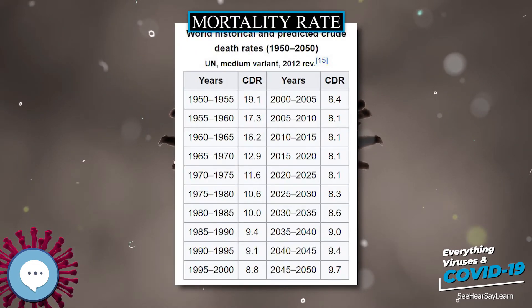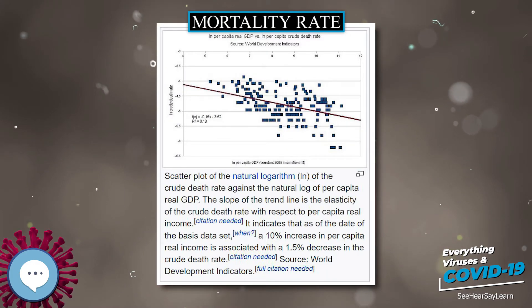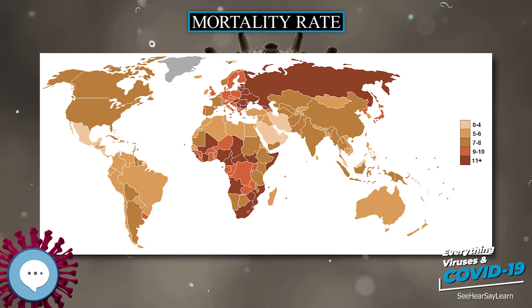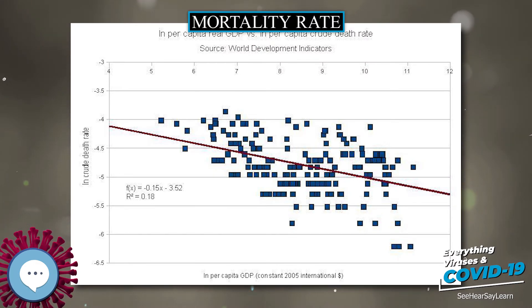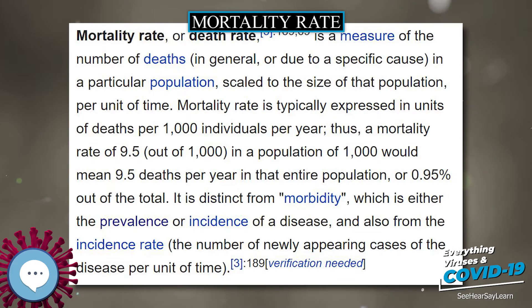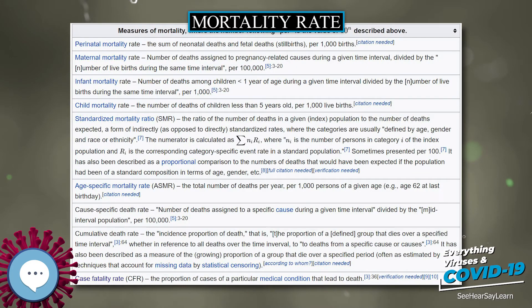The crude death rate is defined as the mortality rate from all causes of death for a population, calculated as the total number of deaths during a given time interval divided by the interval population, per 1,000 or 100,000. For instance, the population of the U.S. was approximately 290 million 810 thousand in 2003, and in that year approximately 2 million 419 thousand 900 deaths occurred in total, giving a crude death rate of 832 deaths per 100,000.